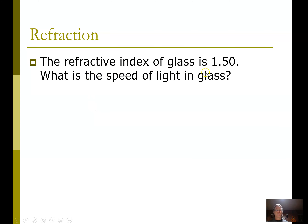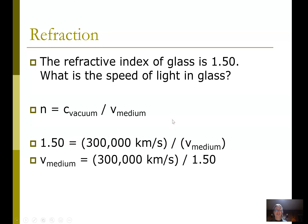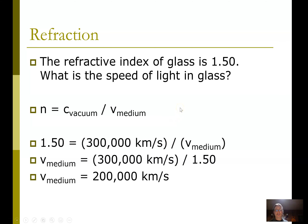The refractive index of glass is 1.5. What's the speed of light in that glass? It's the speed of light in a vacuum divided by n. Since n is 1.5, we solve for v — v goes on top, n goes on the bottom. 300,000 km/s divided by 1.5 gives 200,000 kilometers per second, or 200,000,000 meters per second.